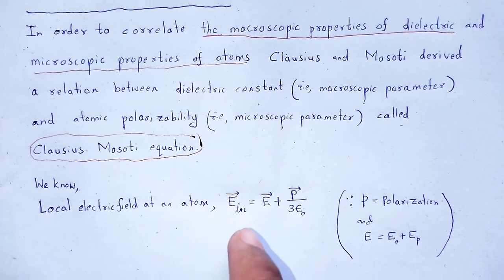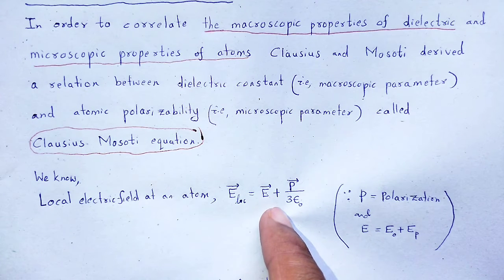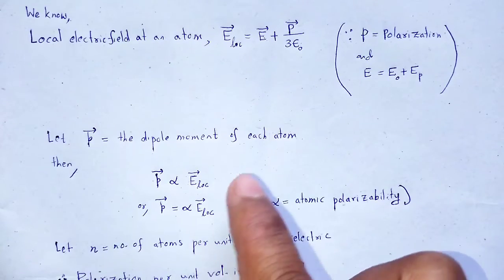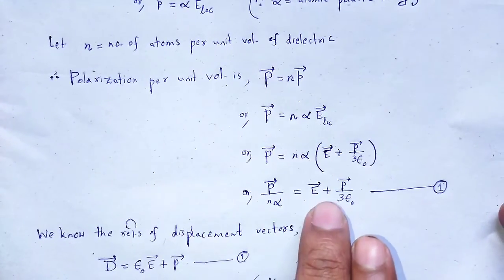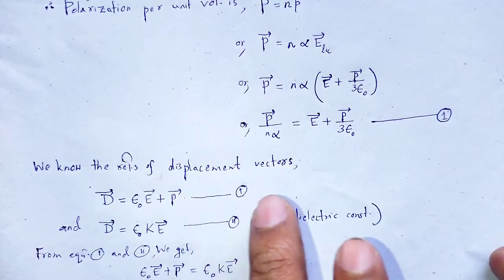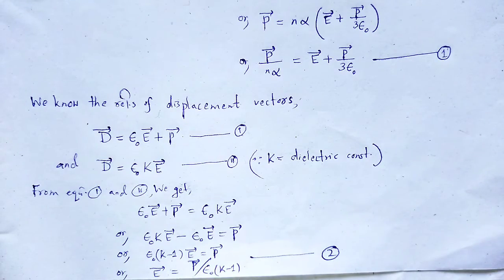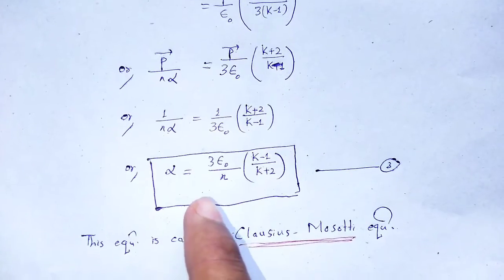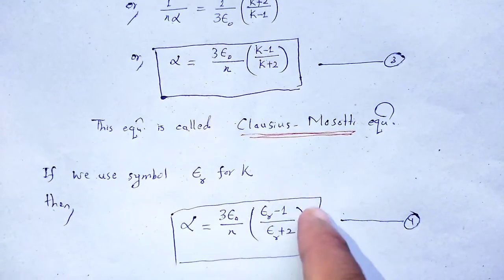First we used the local electric field at an atom — also known as the Lorentz field, introduced by scientist Lorentz — which we discussed in the previous video. Then, taking the dipole moment of an atom and relating it to the local electric field, we proceeded mathematically. Using the displacement vector relations and comparing the two equations, the value of E was derived and substituted into equation one. Simplifying, we arrived at the Clausius-Mossotti equation. If K is written as εᵣ, the equation takes that equivalent form.